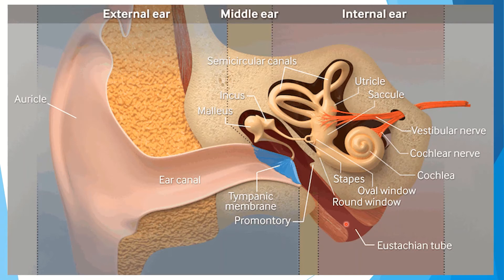The cochlea has nerve endings of the auditory nerve connected to it, and it transmits auditory signals to the auditory nerve. The auditory nerve takes auditory signals to the relevant part of the brain. The semicircular canals contribute to maintaining the balance of the body.